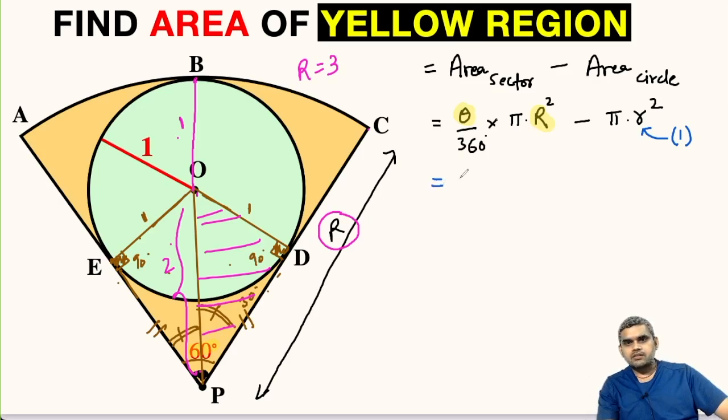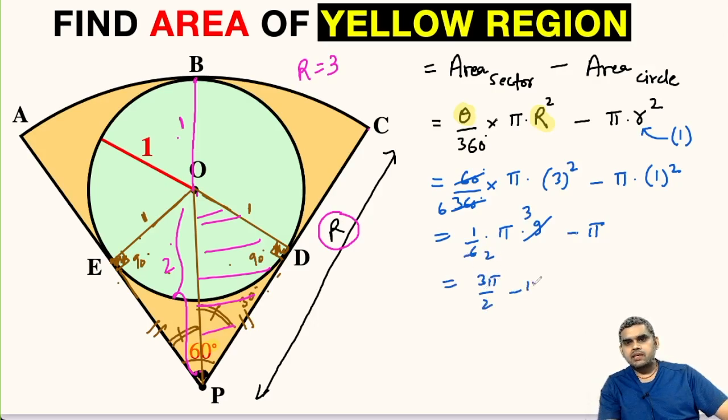Let us substitute the values. Theta is 60 degrees divided by 360 degrees multiplied with pi times 3 squared minus pi times 1 squared. This will be 1 upon 6 times pi times 9 minus pi. We can divide it, so by 3 it will be 3 by 2. So 3 pi by 2 minus pi, this will be pi by 2 square units.